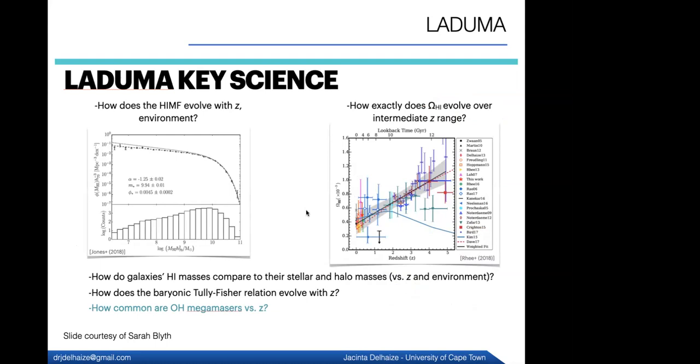This is a slide from Sarah Blyth, just talking about a few different science goals of LADUMA. So we basically want to understand what's going on with the hydrogen content of galaxies in different cosmic epochs, so with redshift, and in different environments. So we want to know things like what's going on with the H1 mass function, the number of galaxies per unit volume of different masses. And does this evolve over time? Does this evolve over environment? What about the total cosmic H1 density of the whole universe? How do the H1 masses of galaxies compare with the mass from their stars? And what's going on with the Tully-Fisher relation? And then as a bonus question, how common are OH megamasers as a function of redshift?